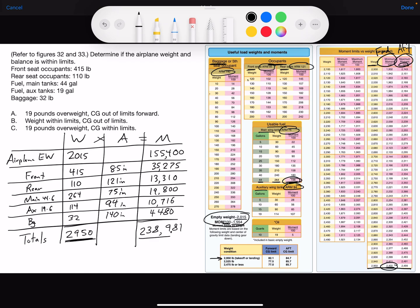Alternatively, we can determine in inches whether or not we are within limits. If you take your total moment and divide it by your total weight, that gives you your center of gravity position. So we had a total moment of 238,981, we'll divide that by our total weight of 2,950, and that should give you approximately 81 inches.